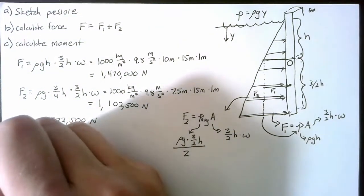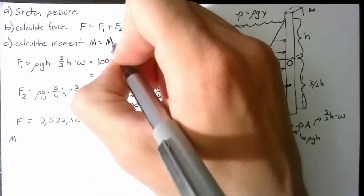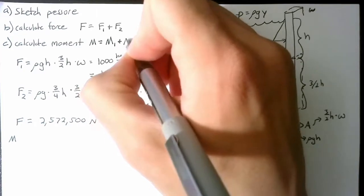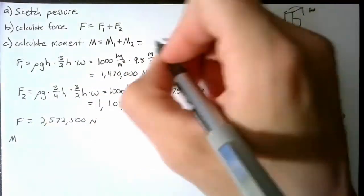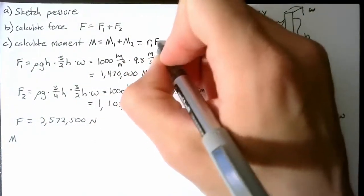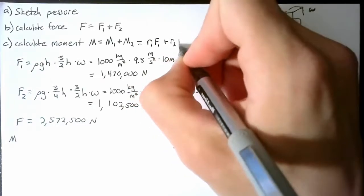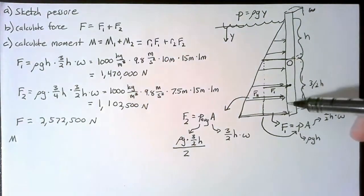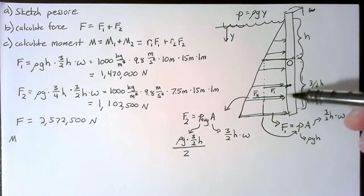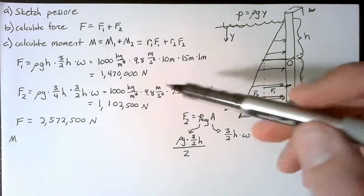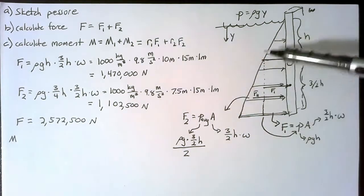Now the way we get our moment, again, is by calculating the moment from these two forces. Another way of saying that is that this is R1 times F1 plus R2 times F2. So since we know exactly how far away these forces are being applied, we can calculate the moments that they impart on our pin.